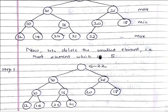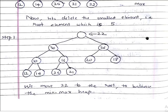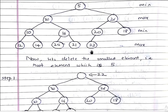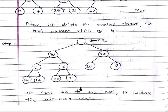Now let's delete the smallest element, that is the root element which is 5. Step one: we delete the element from the root and shift 22 to the position of 5, so that we can balance the tree. We have to move 22 to the root to balance the min-max heap.